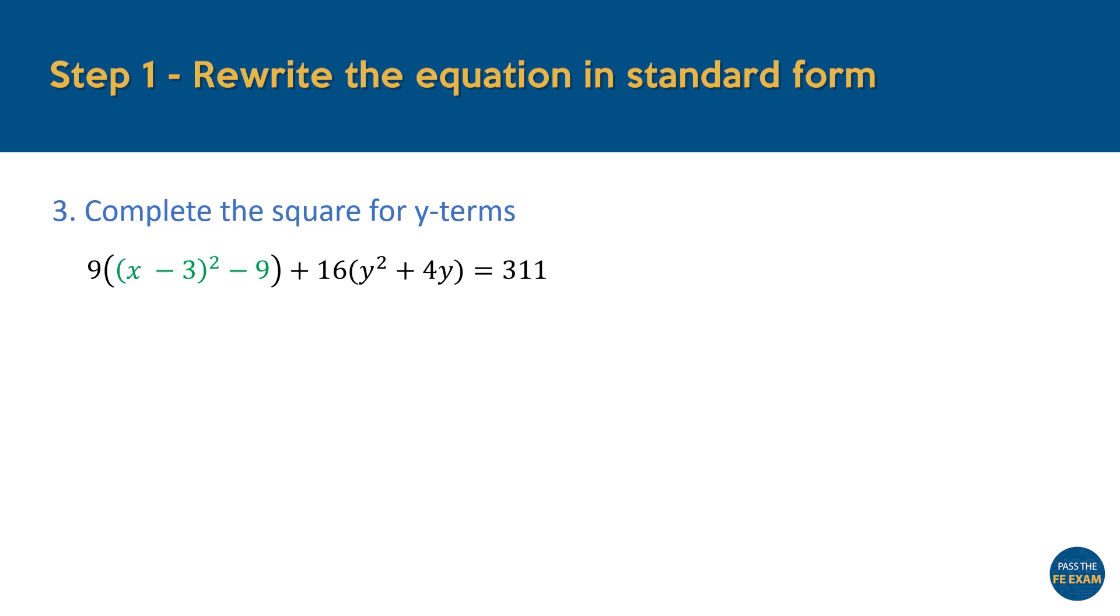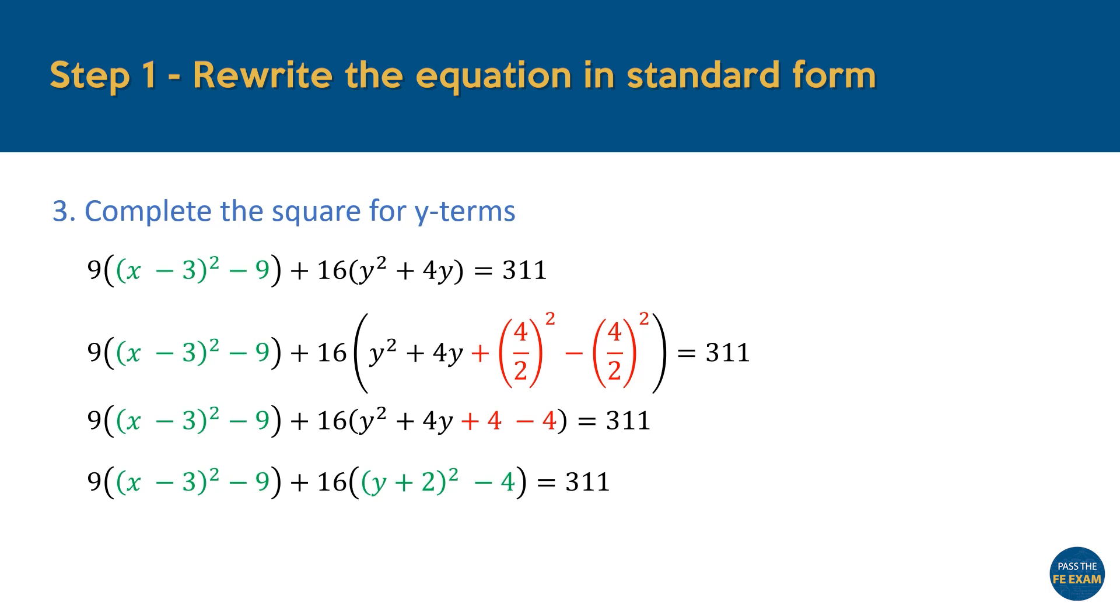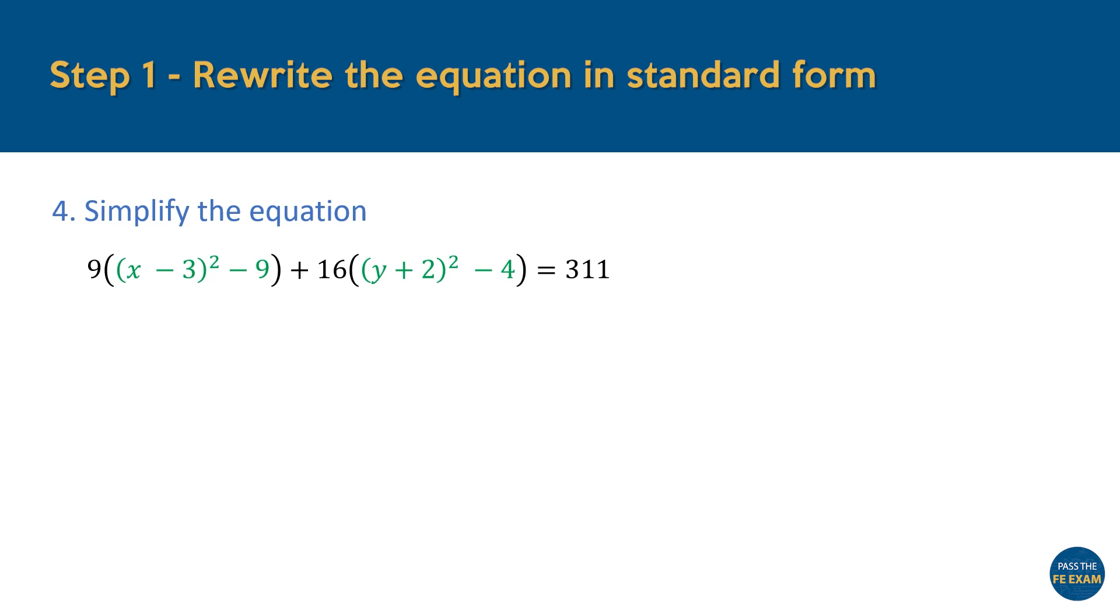Next, we apply the same process to the Y terms. To complete the square, we take the coefficient of Y, divide it by 2, and then square the result. This square value is added and subtracted within the brackets as before. And once this adjustment is made, the first three Y terms can be factorized into Y plus 2 squared, with the subtracted constant remaining outside of the factorized expression.